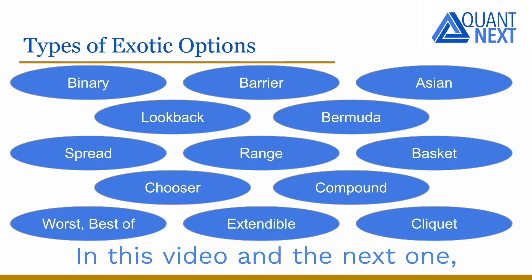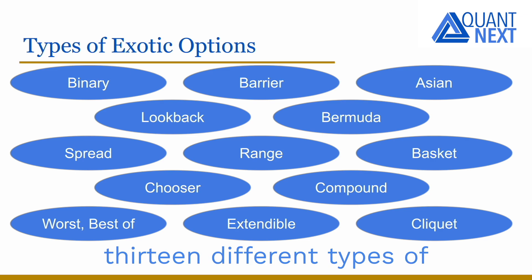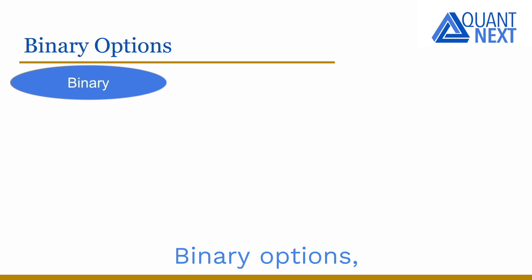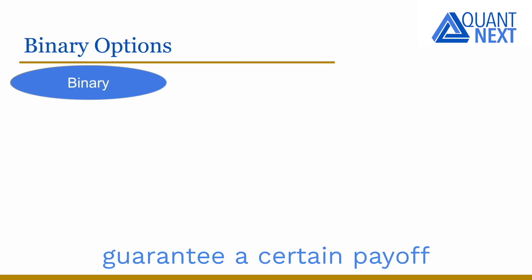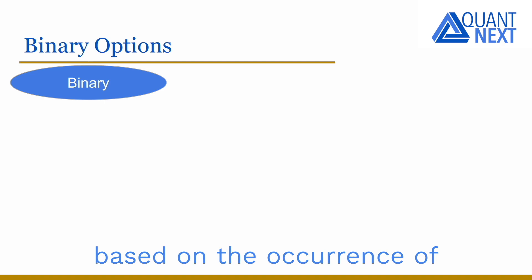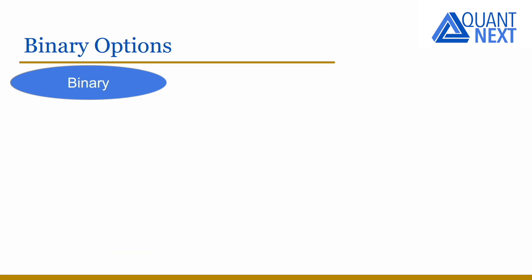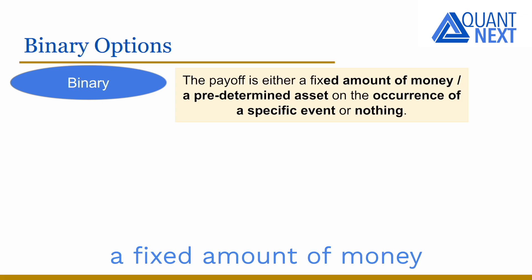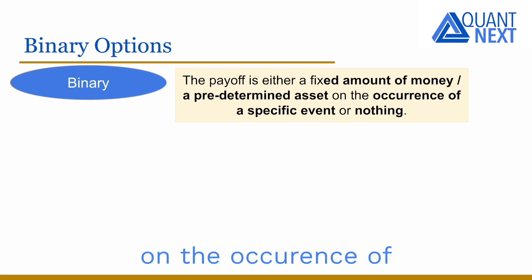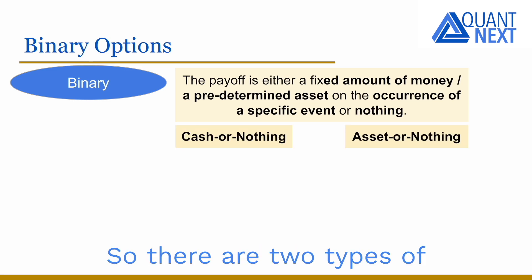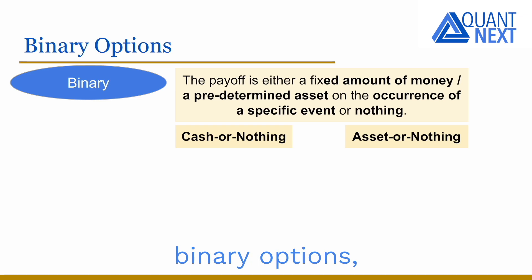In this video and the next one, we will go through 13 different types of exotic options. Binary options, also known as digital options, guarantee a certain payoff based on the occurrence of a specific event. The payoff is either a fixed amount of money or a predetermined asset on the occurrence of a specific event, or nothing. So there are two types of binary options: cash or nothing, and asset or nothing.